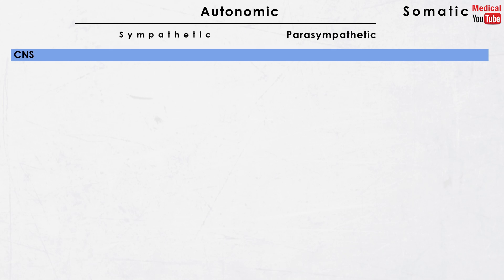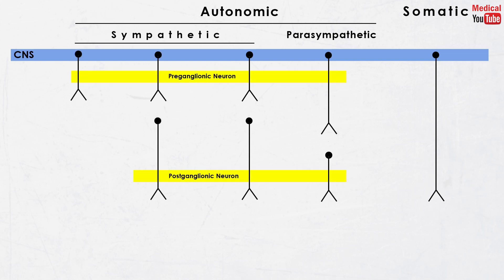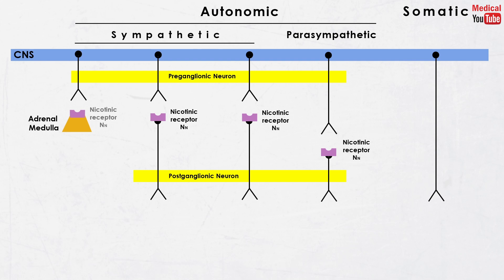Now let's discuss the receptor and neurotransmitter locations. Nicotinic receptors are further subdivided into nicotinic neuronal (NN) receptors, located in the autonomic ganglia and adrenal medulla, and nicotinic muscular (NM) receptors, located in the neuromuscular junction at the skeletal muscles.